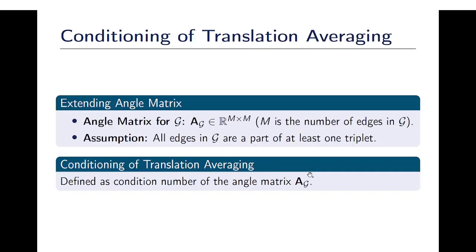Now, we extend the angle matrix for a general network where we assume that all edges in the original network are a part of at least one triplet. Given this, we define the conditioning of a translation averaging problem as the condition number of the angle matrix.